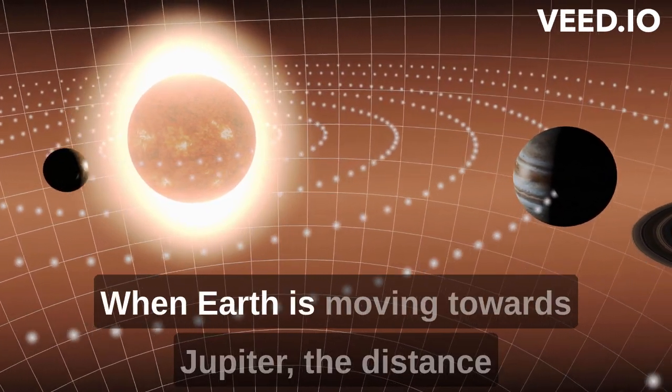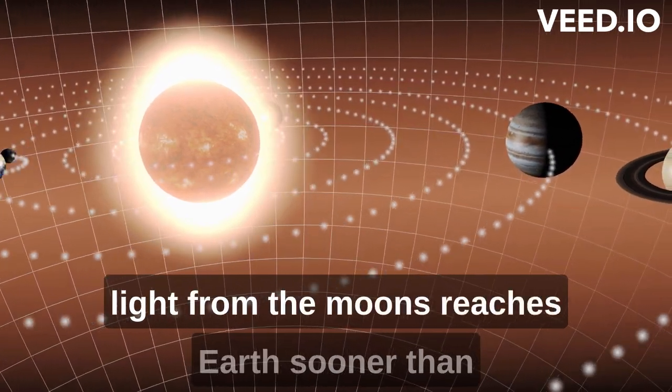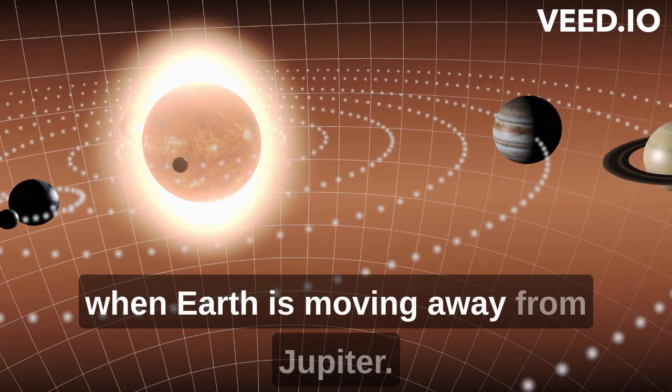When Earth is moving towards Jupiter, the distance between the two planets is shorter, and the light from the moons reaches Earth sooner than when Earth is moving away from Jupiter.